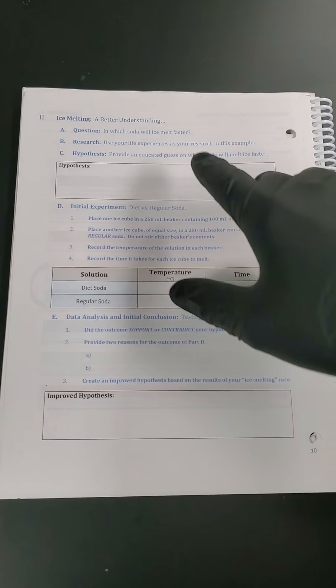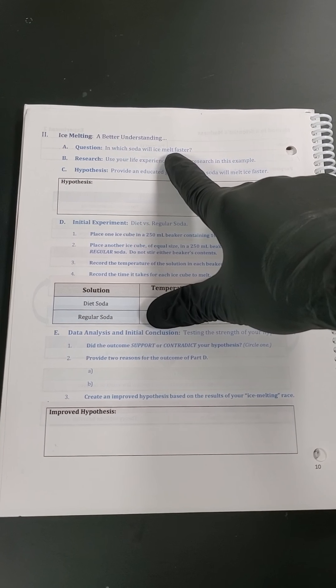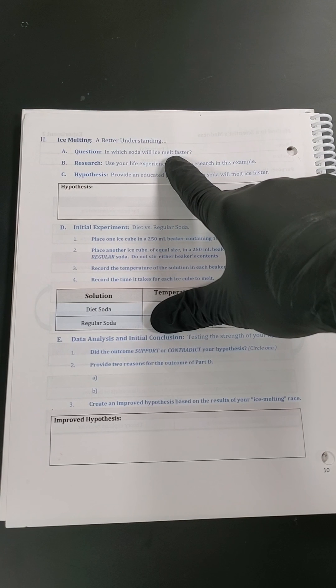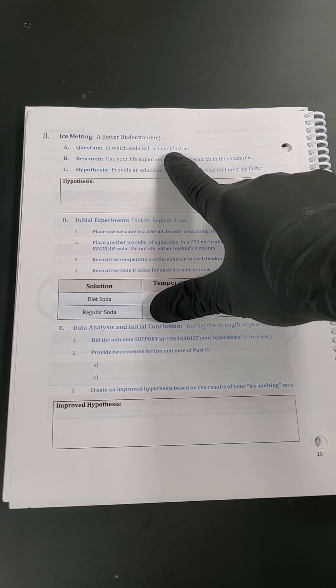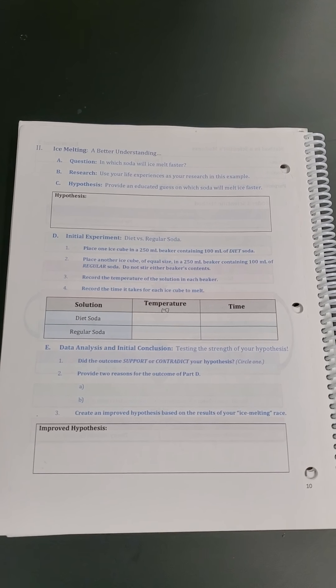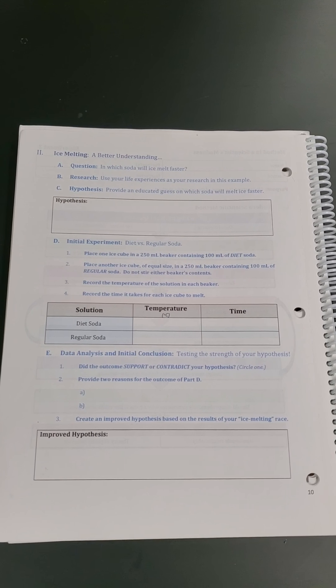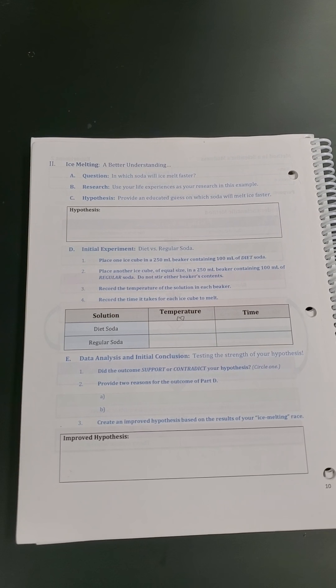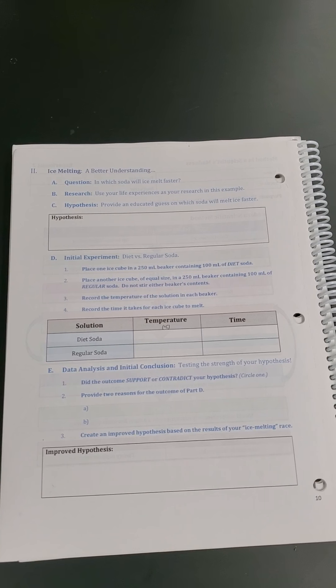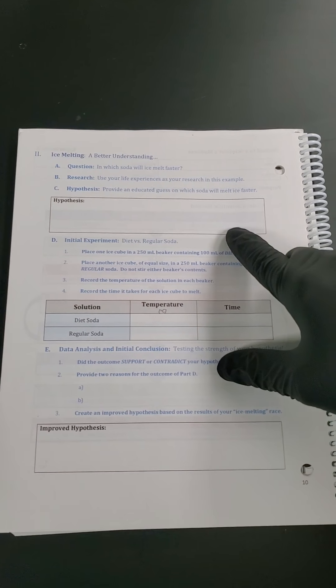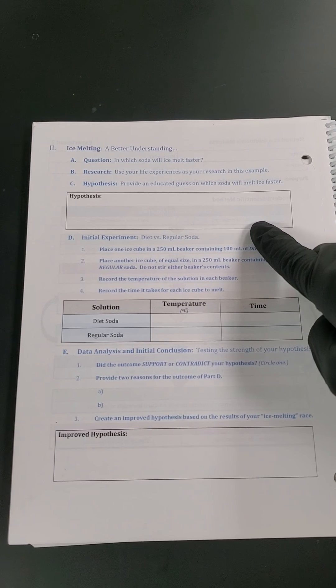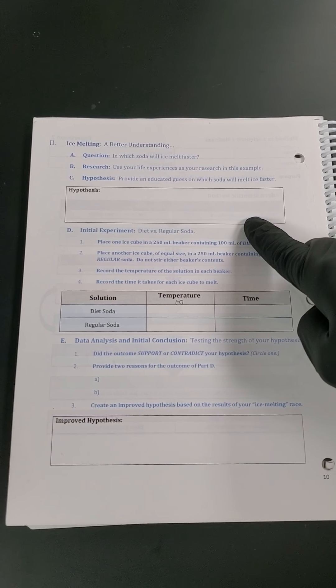Here on page 10, part A, our question is going to be: in which soda does ice melt faster? So the first thing we want to do is try to use our life experiences from restaurants, going out to eat and think about sweet tea versus unsweet tea, or soda versus diet or regular. So using our background knowledge, what do we think may happen? The first thing we want to do is provide an educated guess. Do we think a diet soda or a regular soda would melt ice faster?